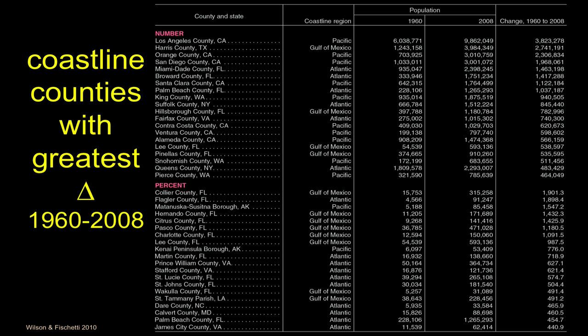In terms of gross numbers, it's LA County, then Orange County, San Diego County, Santa Clara and Contra Costa in the San Francisco Bay Area, Ventura County, and Alameda in the Oakland area. For proportional changes, they're almost all outside of California. Many of these are places that didn't have much population before. In Florida's case, post-World War II air conditioning made it more livable, and it's exploded, especially in recent years with retired folks looking for milder weather.